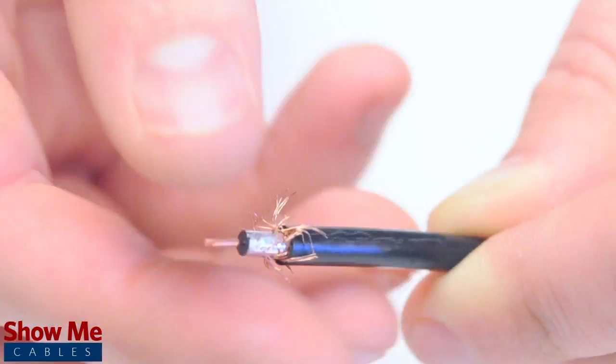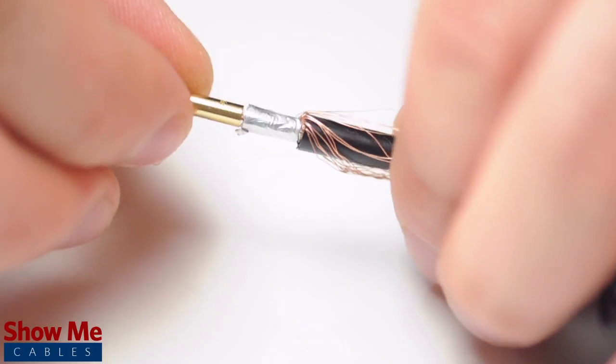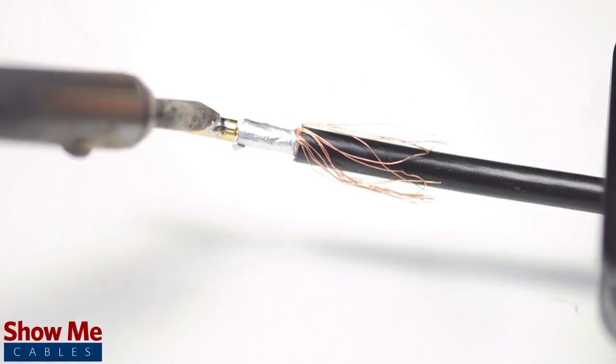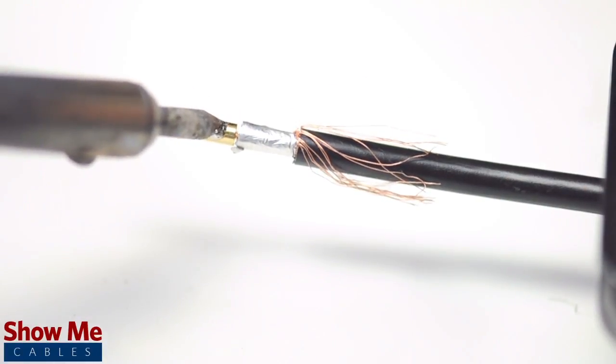Pull back the braided shield and insert the pin onto the center conductor. Solder the pin onto the center conductor and insert the connector housing over the cable.